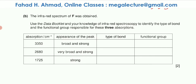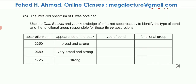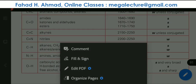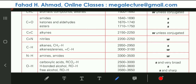Now the infrared spectrum has been obtained. Using the data booklet and knowledge of infrared spectroscopy, we need to identify the bond type and functional group for three absorptions. For the broad and strong absorption at 3350 cm⁻¹: looking at the data booklet, O-H bonds belonging to alcohols resonate in that range, so it's definitely an O-H bond.